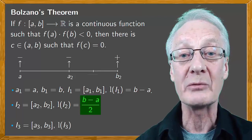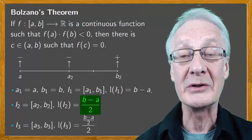Half of (b - a)/2 is (b - a)/2 divided by 2, or (b - a)/2².